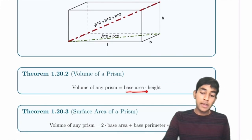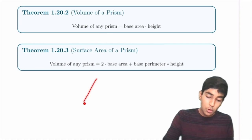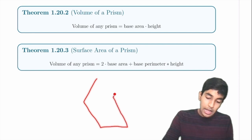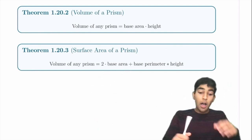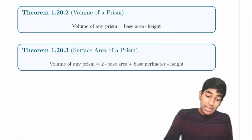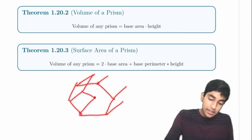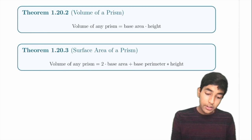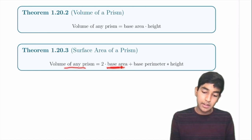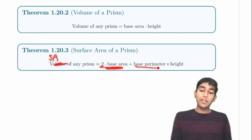The volume of any prism is base area × height. A prism has two parallel bases — the top shape doesn't have to be a rectangle; it can be a hexagon, octagon, or any other shape. The surface area of a prism is 2 × base area + base perimeter × height.